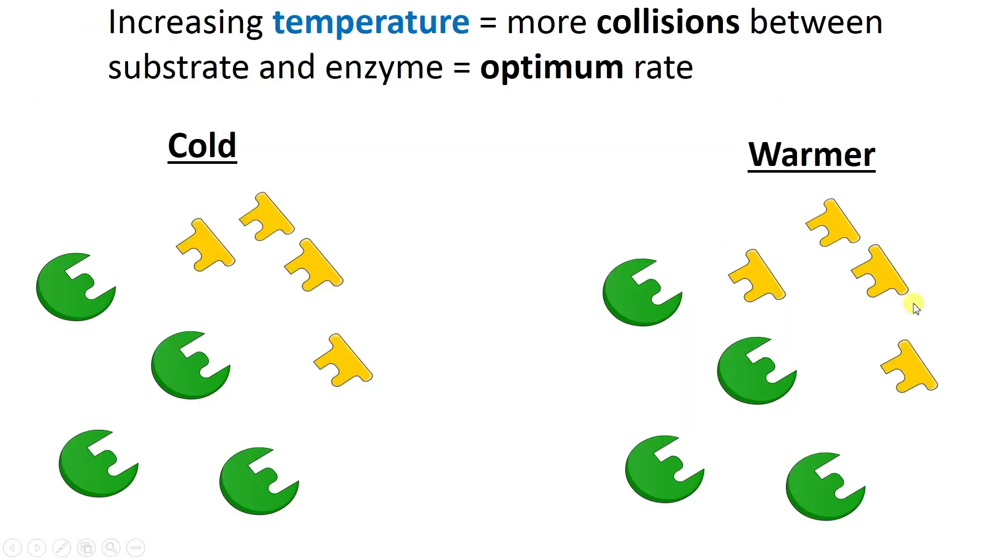So I've got at the top here: increasing temperature equals more collisions between the substrate and enzyme, which equals optimum rate. So what does this mean? As we increase the temperature of the surrounding of the enzyme and the substrates, there will be more collisions between the two parts and this will lead to an optimum rate. Now optimum just means the highest rate that it could be, where it's going to perform at its optimum conditions, its best conditions.